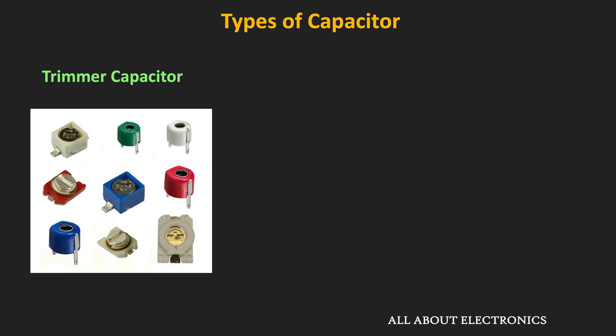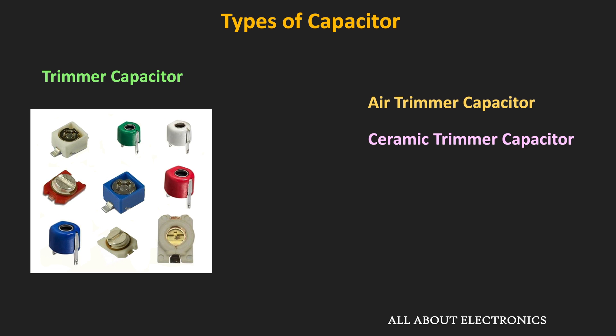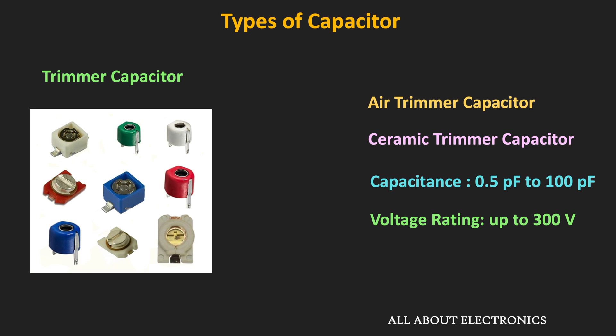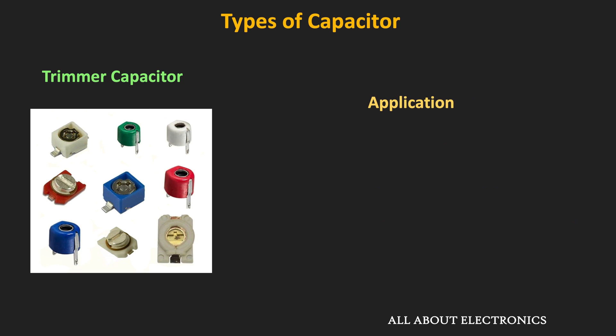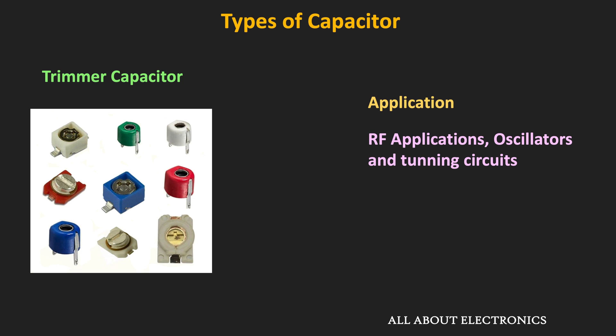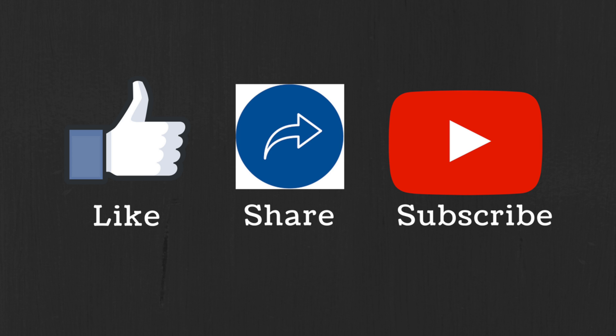There are two types of trimmer capacitors: the air trimmer capacitor and the ceramic trimmer capacitor. The minimum capacitance is around 0.5pF, but it can be varied up to hundreds of pF, with voltage ratings up to 300V. These capacitors are used in RF applications like oscillators and tuning circuits. These are the different types of capacitors which are frequently used in different applications. If you have any question or suggestion, do let me know in the comment section below. If you like this video, hit the like button and subscribe to the channel for more such videos.